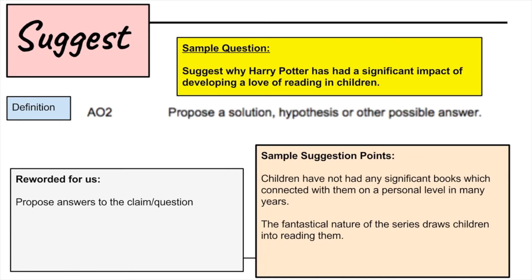Suggest is an AO2 command term. The IB definition is to propose as a solution, hypothesis, or possible answer. Reworded: propose an answer or claim. A sample suggestion question would be: suggest why Harry Potter has had a significant impact on developing a love of reading in children. Sample suggestion points: children had not had any significant books which connected with them on a personal level in many years — that's one possible solution. Another: the fantastical nature of the series draws children into reading. You're providing possible answers — well-thought-out, in-depth responses.